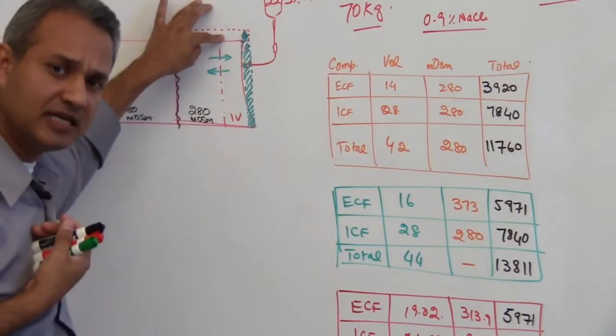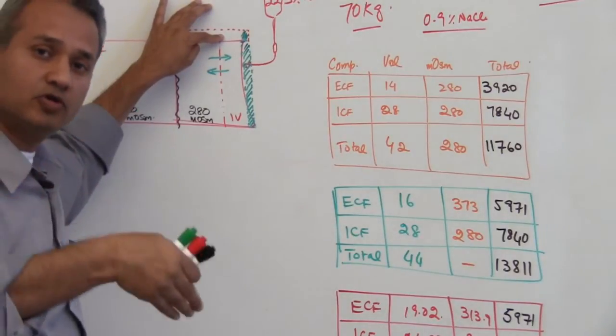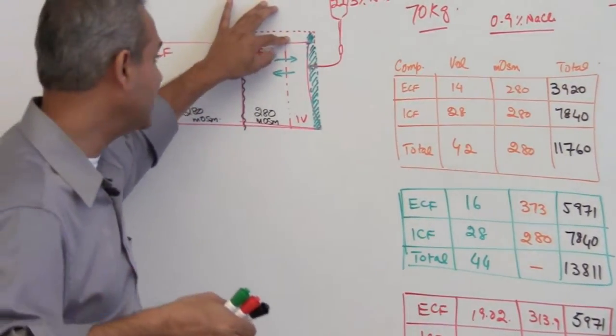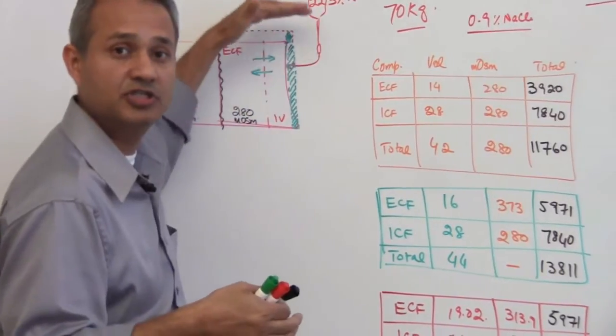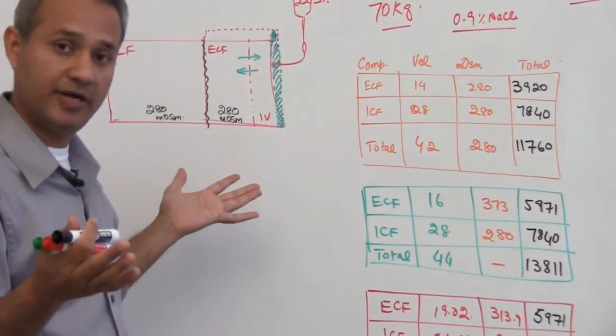the sodium chloride's addition to the body has caused the osmolarity to increase. That makes sense, right? We have added more sodium chloride to the body, we have added more particles, so the concentration of the particles has gone up.